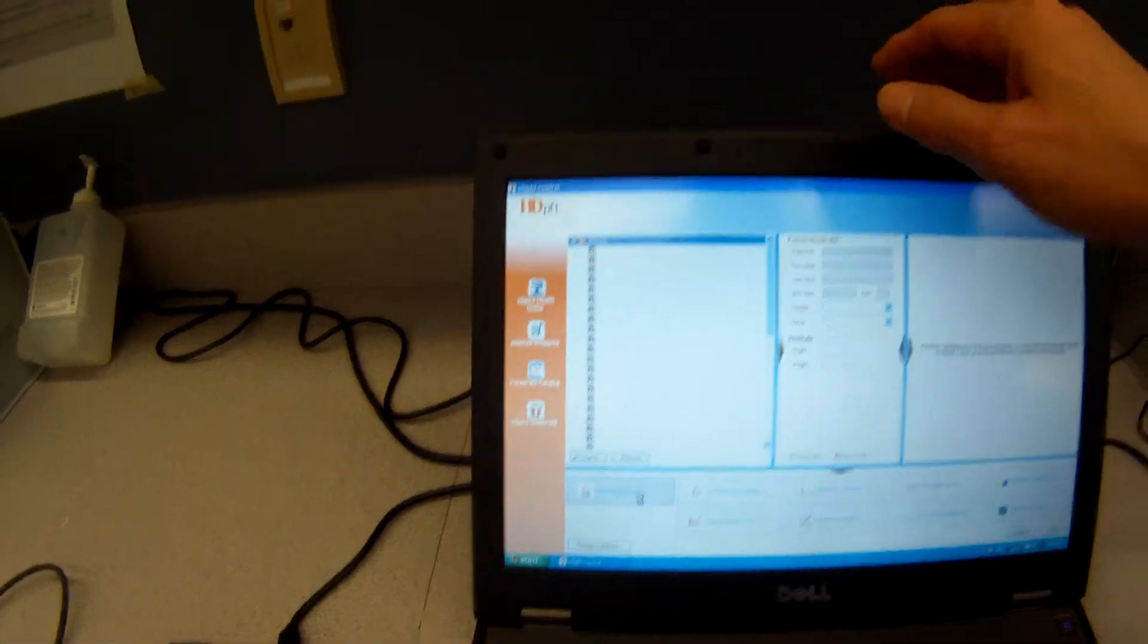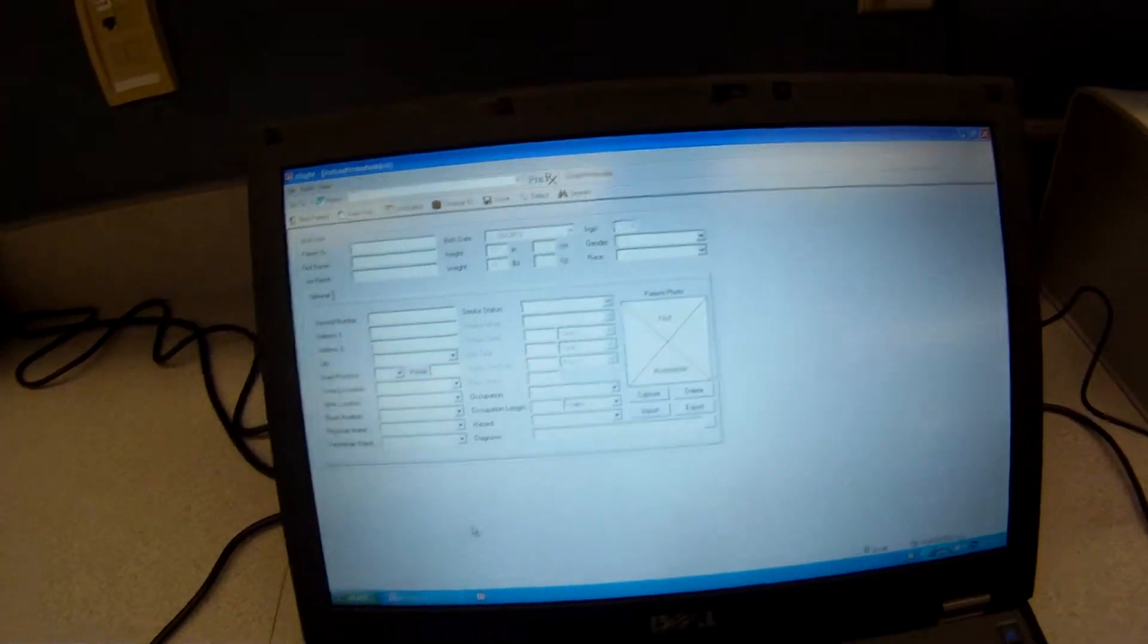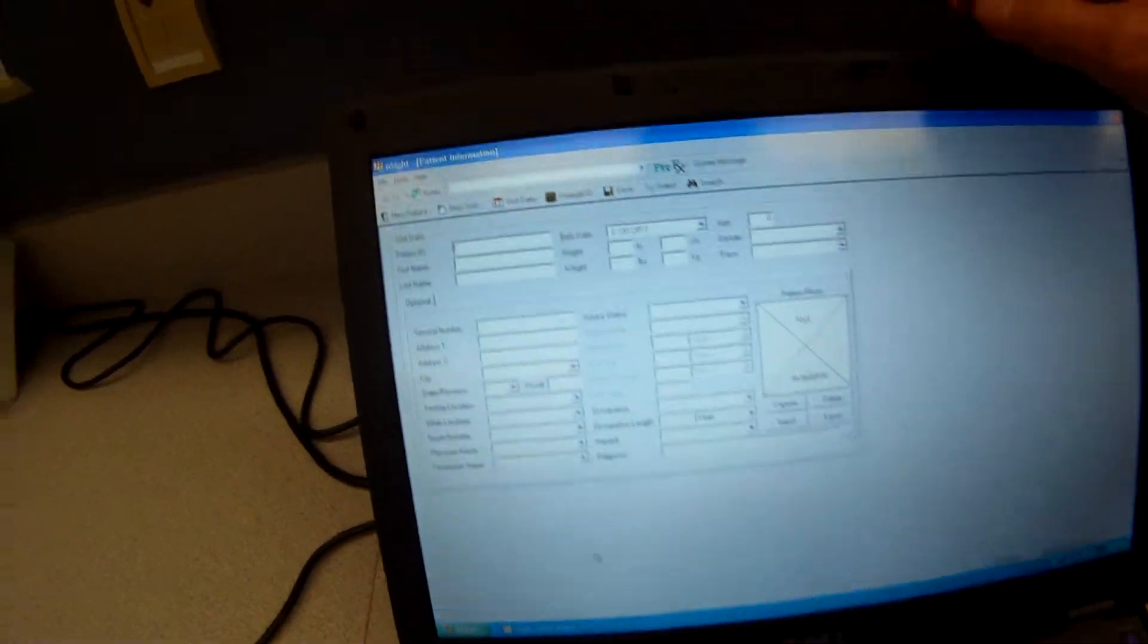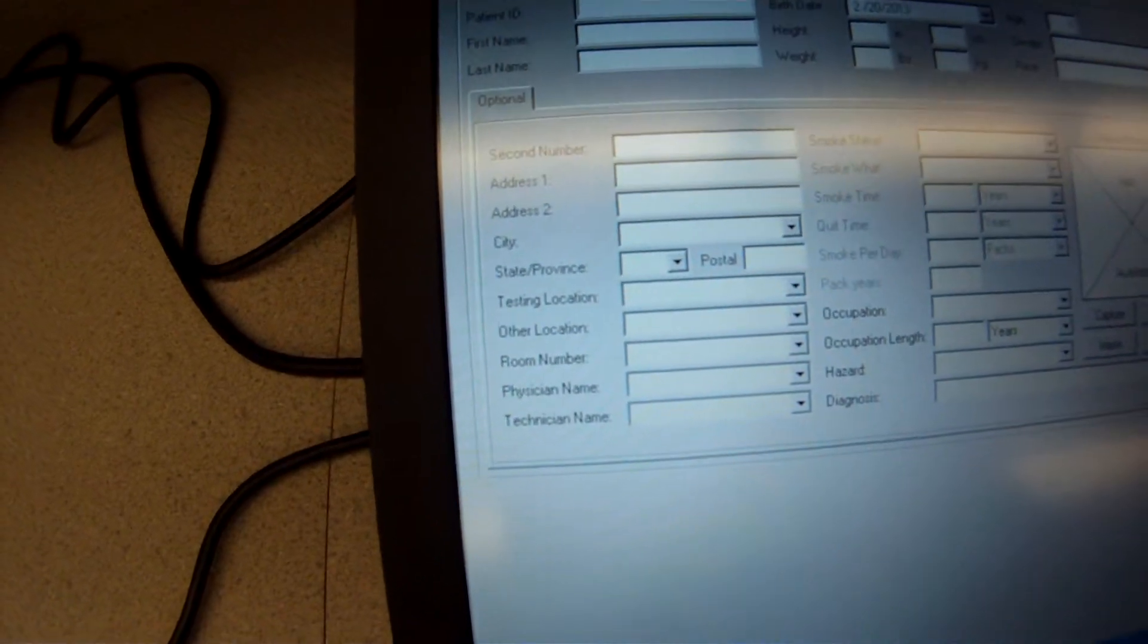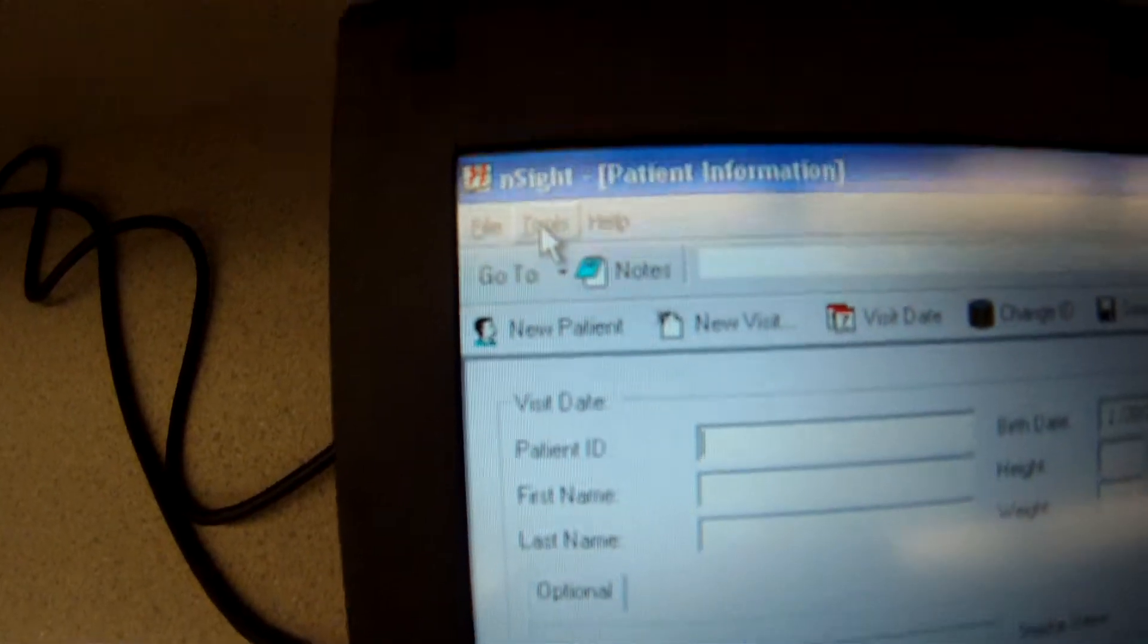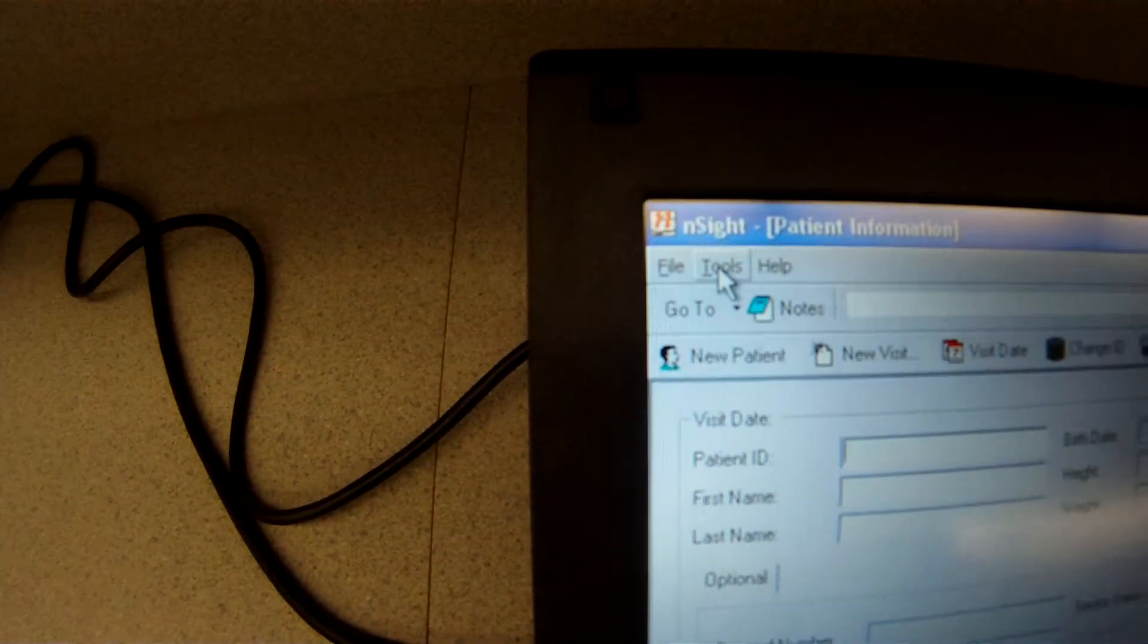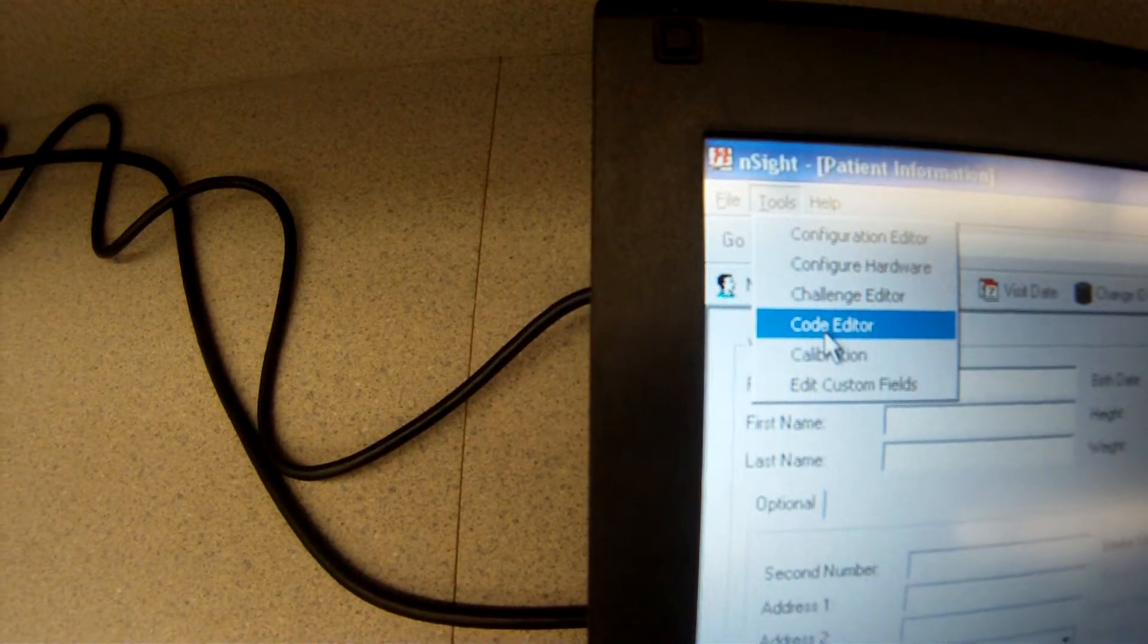We click on patient information. Give it a second here. And then it comes up with how we would start with our patient visit information, but I'm going to go right up here to tools. And under tools, I'm going to go calibration.